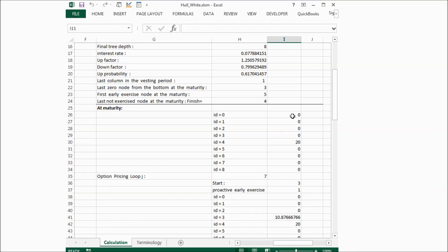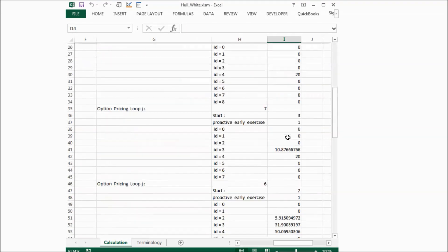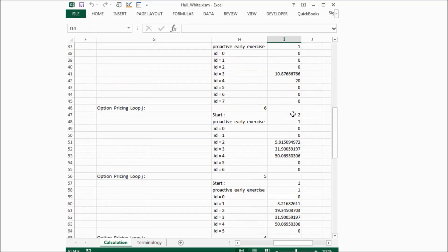We can see here, only node 4 has value 20. That's because the stock price is above strike price by 20. And then if we go further,